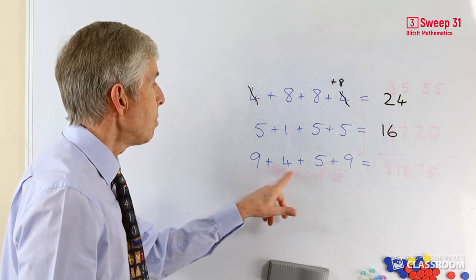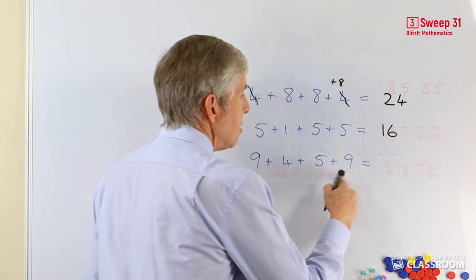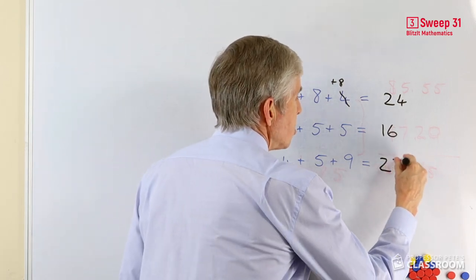We could do it a lot more simply by saying 4 plus 5 is 9. 9 and 9 and 9 is three nines, or 27.